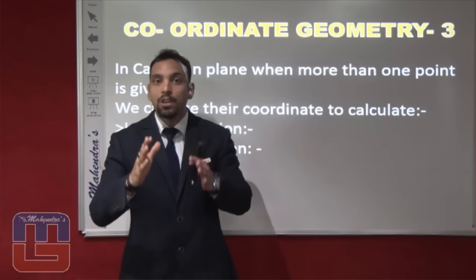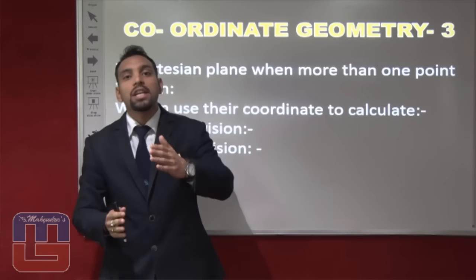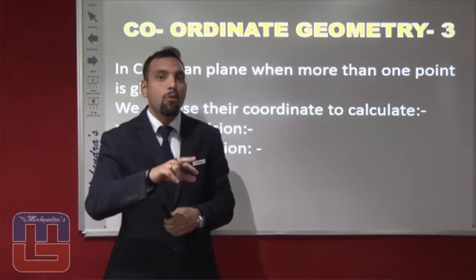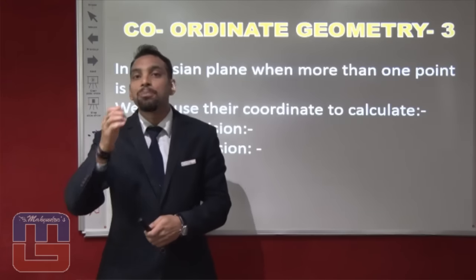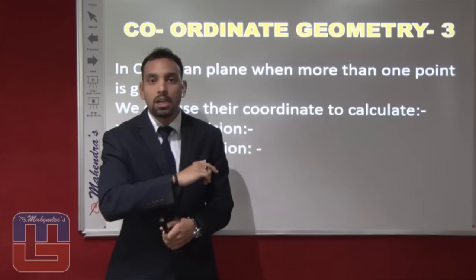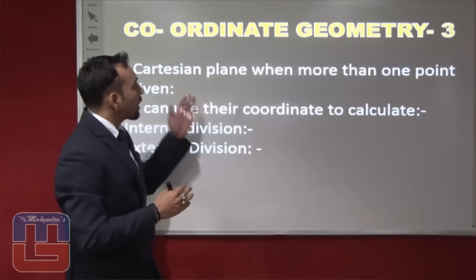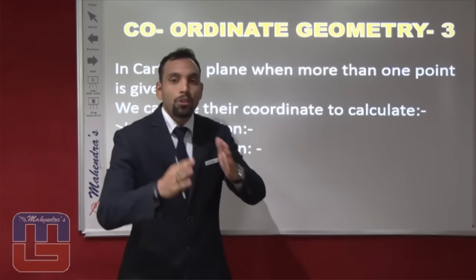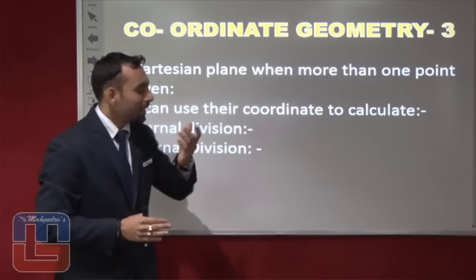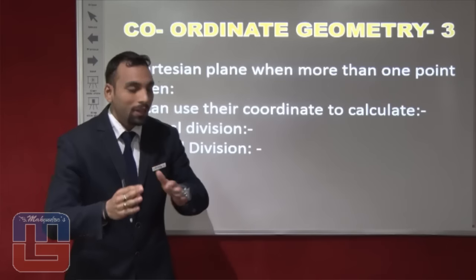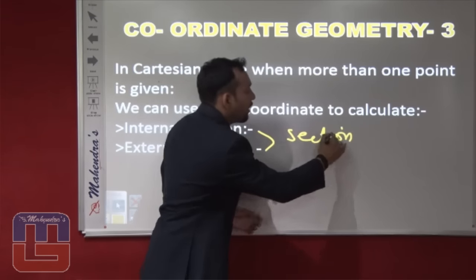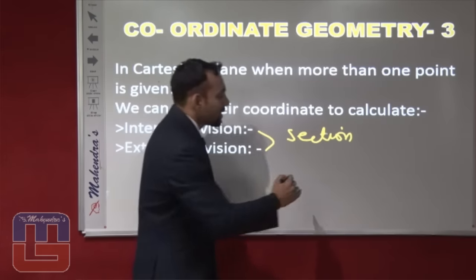Today we will discuss if we have given 2 points or more than 2 points in a Cartesian plane, then a point divides the 2 points whether it may be internally or it may be externally in the given ratio. So what are the formulas or what are the conditions? When more than 1 point is given we can use their coordinates to calculate the internal division or the external division. These are also called the section formula. That means today we are going to discuss the section formula.